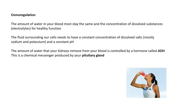So, osmoregulation. The amount of water in your blood must stay the same, and the concentration of dissolved substances — you could call them electrolytes, you could call them ions. For healthy function, the concentration of stuff dissolved in your blood should stay about the same. The fluid surrounding our cells needs to have a constant concentration of dissolved salts, mostly sodium and potassium, and also a constant pH, which is all to do with hydrogen ions. The amount of water that your kidneys remove from your blood is controlled by a hormone called ADH, which is produced in the pituitary gland.